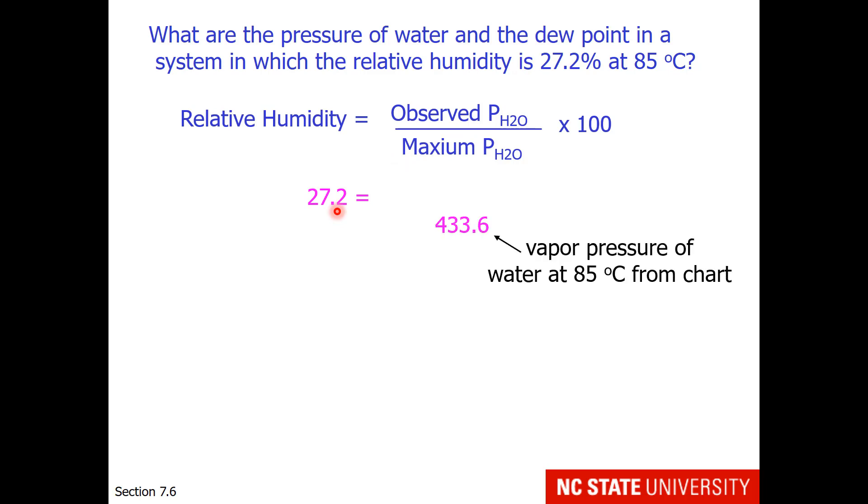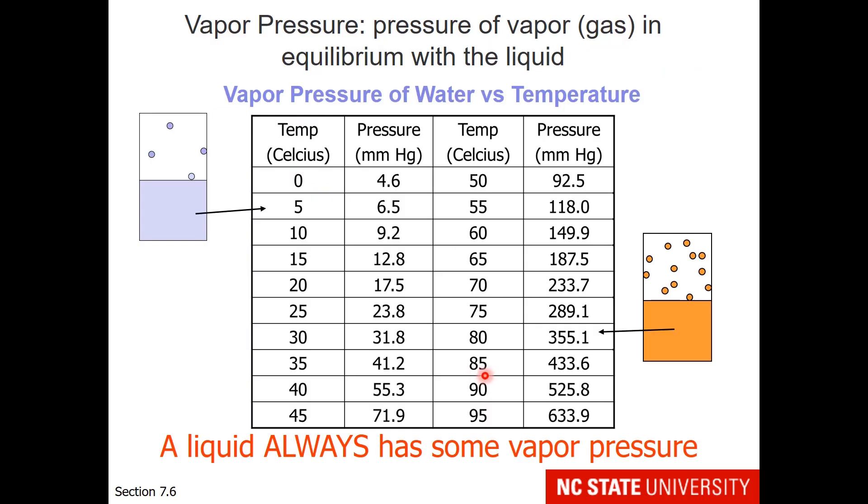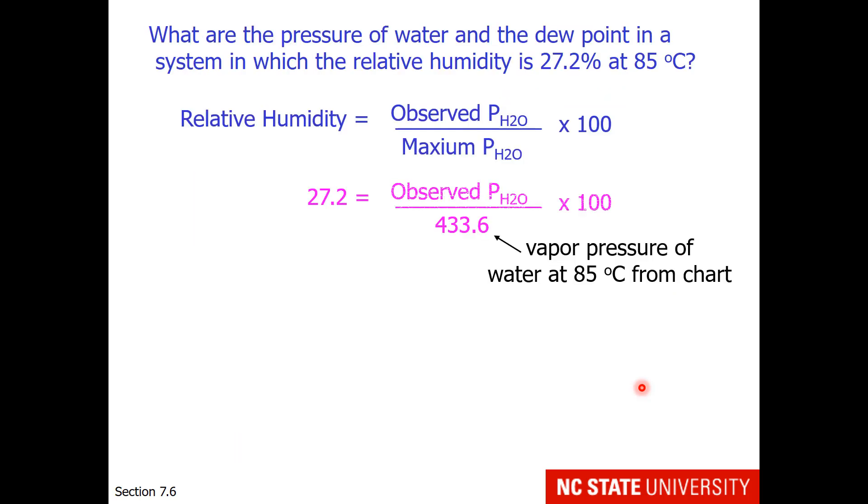Now I need to look up a value on the chart. This value is the maximum vapor pressure of water at 85 degrees Celsius, and that value is 433.6. The maximum vapor pressure water can have above the liquid at 85 degrees Celsius is 433.6. Now I just need to solve for the observed vapor pressure of water. So I will multiply 0.272 times 433.6 and I will get an observed vapor pressure of 118.